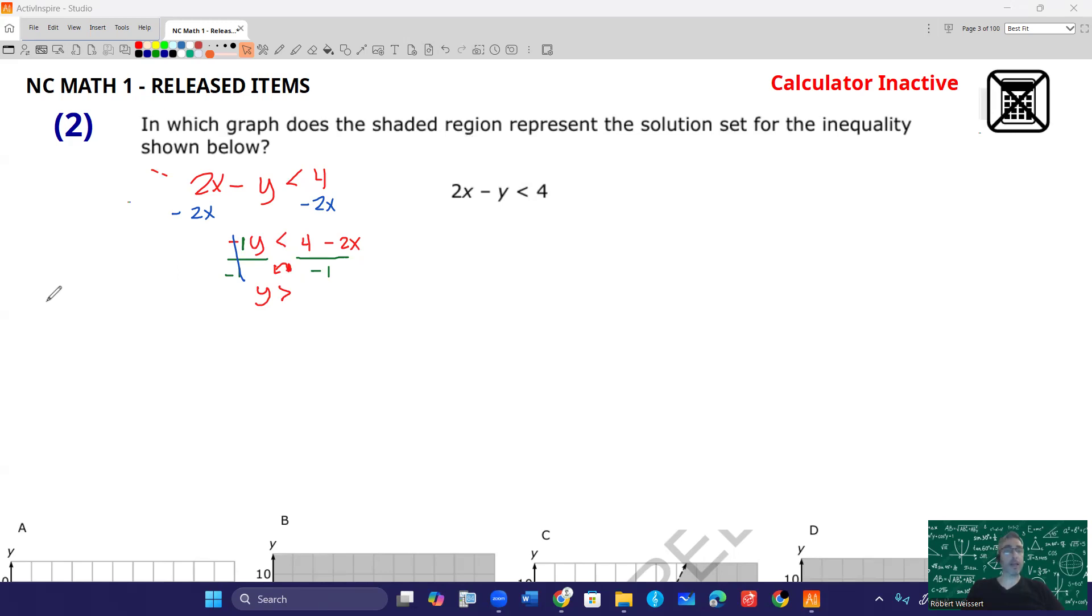Next, when you divide these terms by negative 1, you're actually dividing both of them by negative 1. So 4 divided by negative 1 is actually going to be negative 4, whereas negative 2x divided by negative 1 is going to be positive 2x. Now we can get that in slope-intercept form. So we'll say y is greater than, and we'll put the 2x first, minus 4.